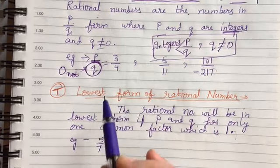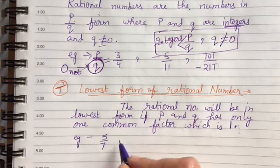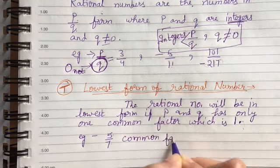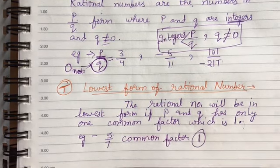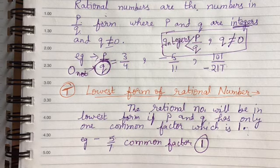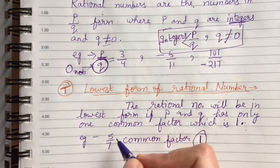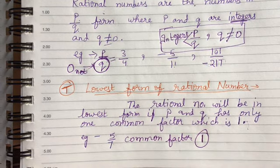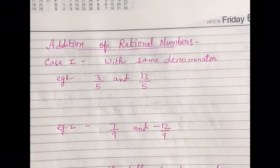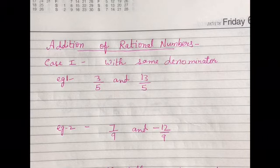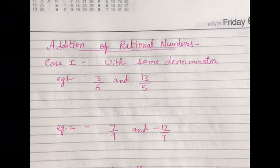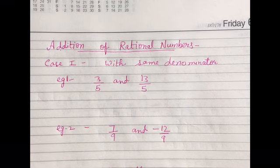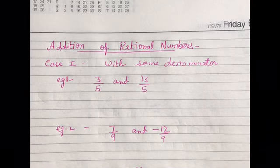Next thing is the lowest form of a rational number. Lowest form means if the common factor of numerator and denominator is 1 — that means apart from 1, both cannot be divided by anything else. For example, 5 by 7 is in its lowest form; we cannot divide it further. Their common factor is 1. Now the addition, subtraction, multiplication and division of rational numbers is the same as the methods you have already read in integers as well as in fractions.